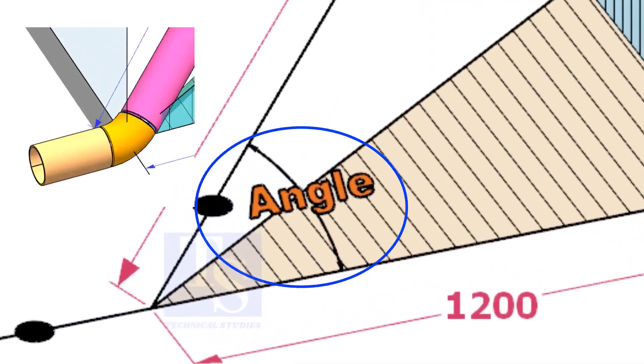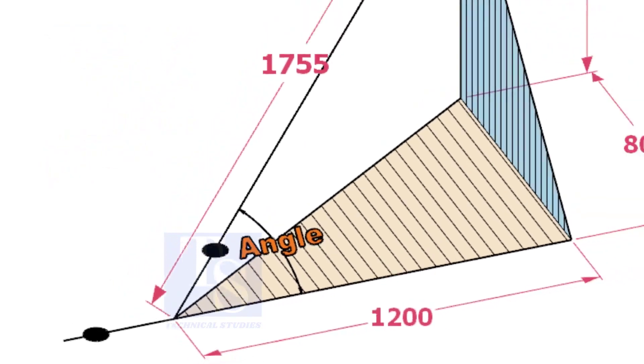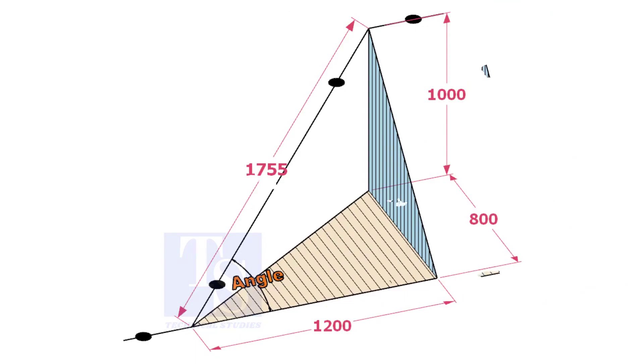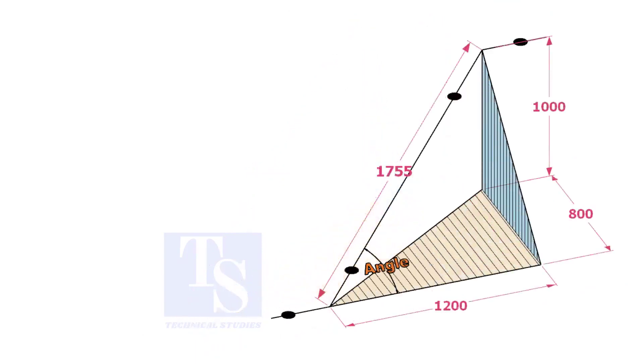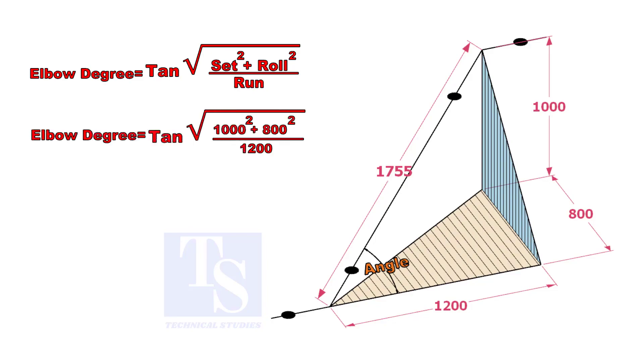Let us calculate the degree of the elbow or the including angle. The formula is the root of the set and the roll divided by run into tan.